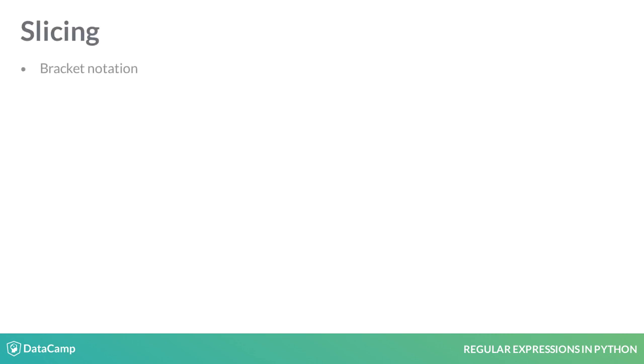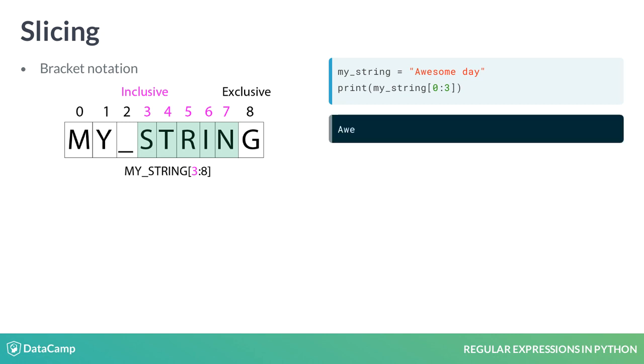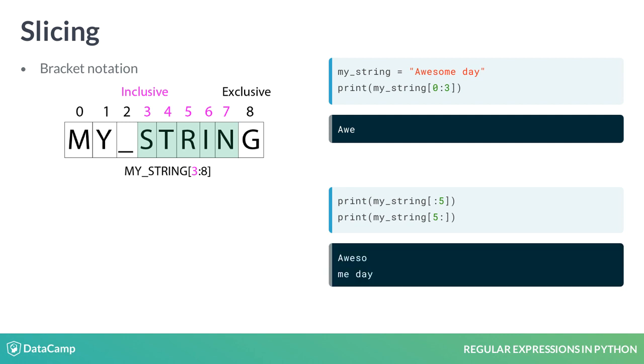With a bracket notation, Python allows you to access a specific part or sequence of characters within the original string. For that aim, we specify the starting and ending positions, inside square brackets, separated by a colon, as you see on the slide. The ending position is excluded in the resulting output. Omitting the first or second index results in the slice starting at the beginning or going until the end of the string, as shown in the output.